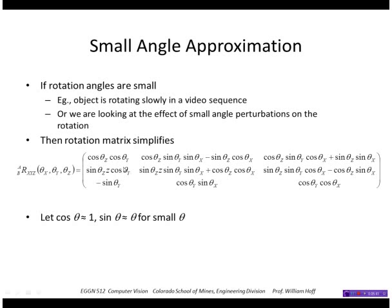then this first element will be one times one. This will be one times theta Y times theta X. So theta Y times theta X will be the product of two very small numbers, which will be approximately zero. And this will be approximately theta Z times one. So anyway, you do all that and this simplifies down to something that looks like this. So we'll use this occasionally a little bit later.